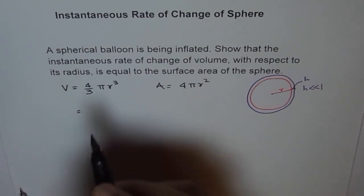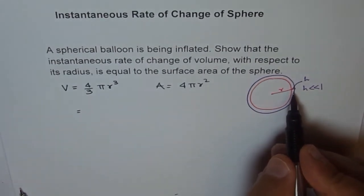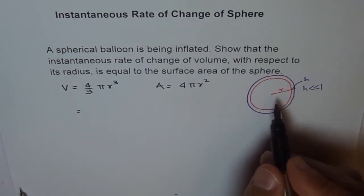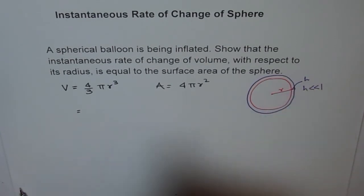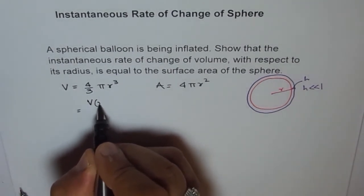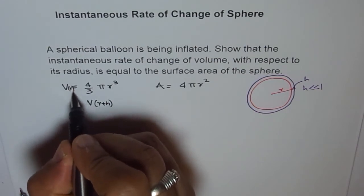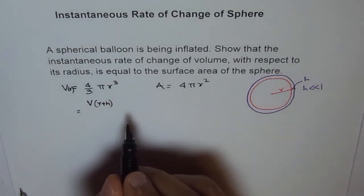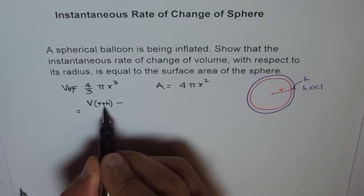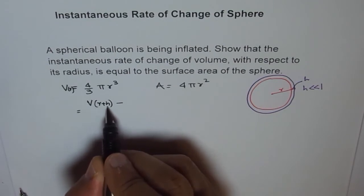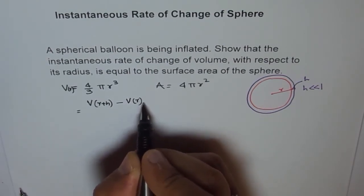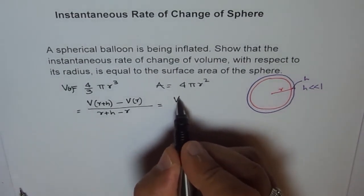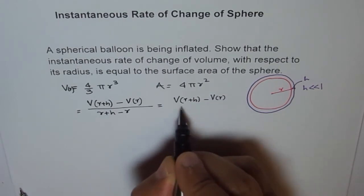So r plus h gives us the volume of the outer sphere and r gives us the volume of the inner sphere. We divide by the change in r, which is h. I should write this volume as a function of r, so that things become manageable — that's function notation. We are trying to find the rate of change in volume with respect to radius. The radius is increased by a small amount h, so we get the change in volume divided by the change in radius: V(r+h) minus V(r), correct?